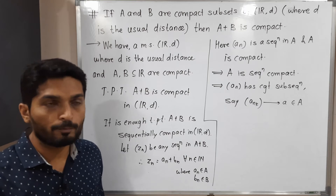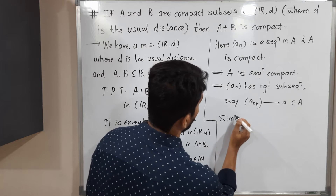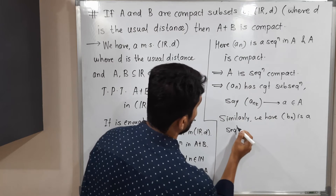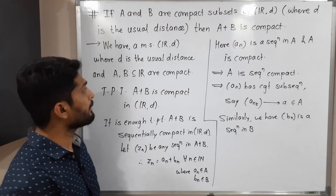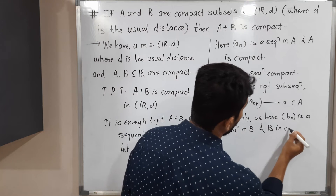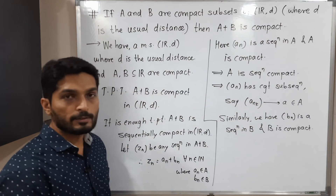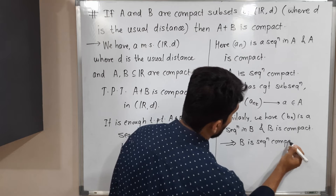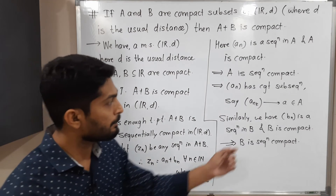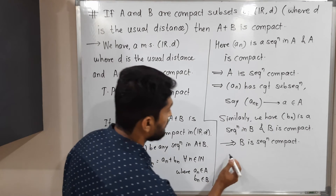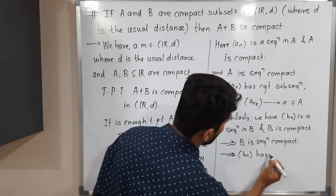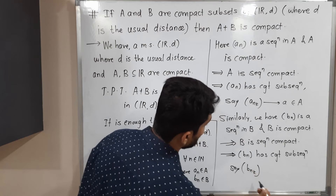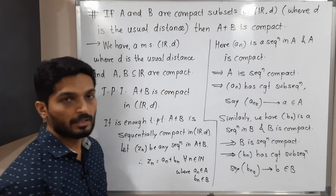Similarly, bₙ is a sequence in B, and B is also compact — this is given information. Using the same result, B is compact implies B is sequentially compact. Sequentially compact means every sequence has a convergent subsequence. So bₙ has a convergent subsequence, and we call it bₙₖ. It converges to some point of capital B, and we call it b.